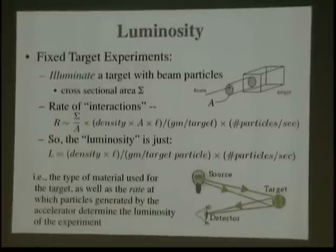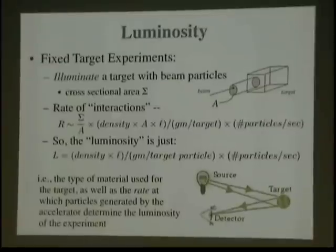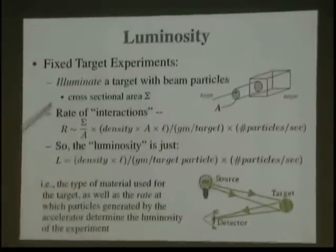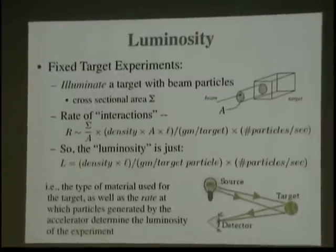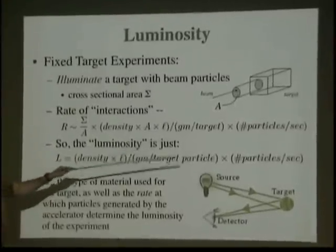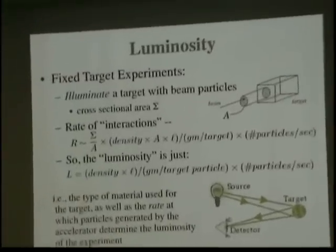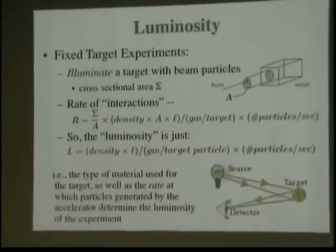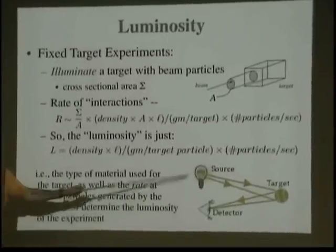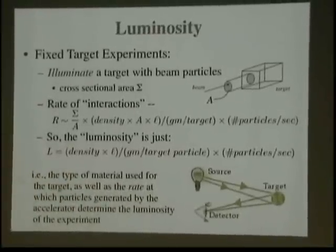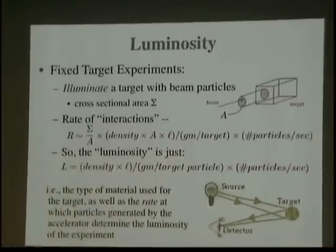How do we measure the quality of the physics coming out? We use a parameter called luminosity. In a fixed target experiment, we're going to illuminate some target material with our beam. It's going to have a cross-sectional area sigma. The rate of interactions is given by sigma over the area of the target, times the density of the target, times the length, times the number of particles per second. The type of material used for the target as well as the rate at which particles are hitting it determine the luminosity. How many particles come from our source and how dense our target is determines how much we're going to see in our detector.